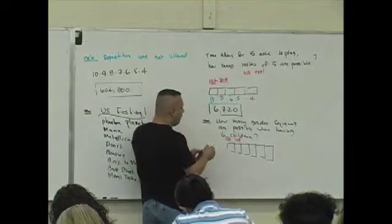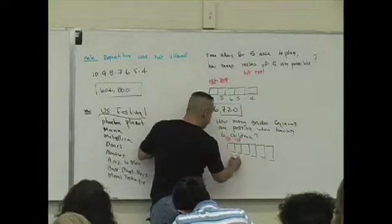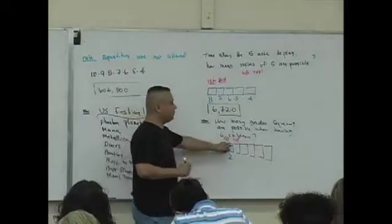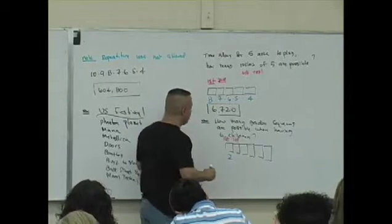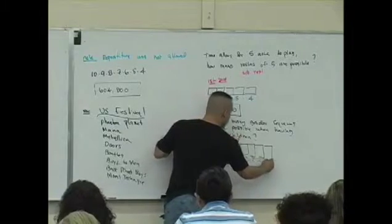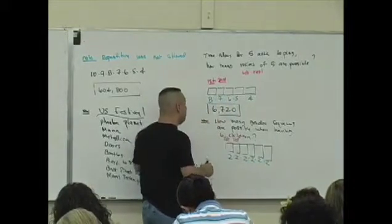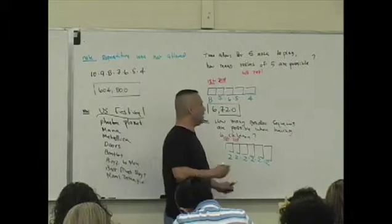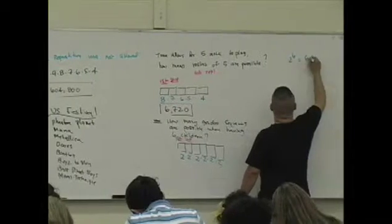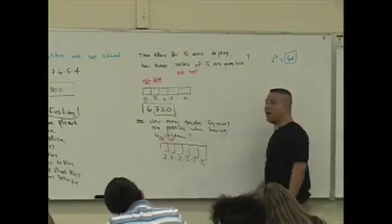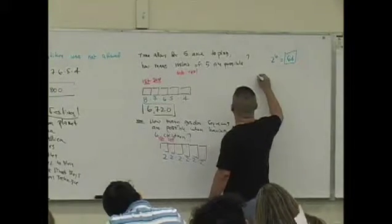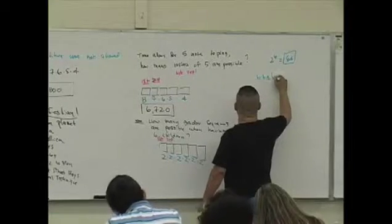Who can tell me for your first child, how many different gender options are possible here? What are they? Boy or what? So for the first child, you can have either a boy or a girl. Is that true? What about for the second child now? Okay. Have a boy or a girl. What about the third? So how many gender sequences are possible when having six children? You take two to the what power? And what does that give you? So there's 64 different gender sequences that are possible when you have six children.